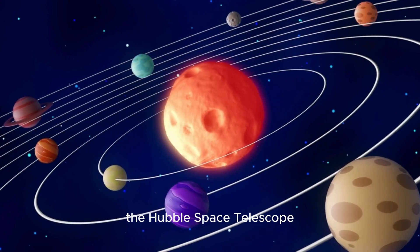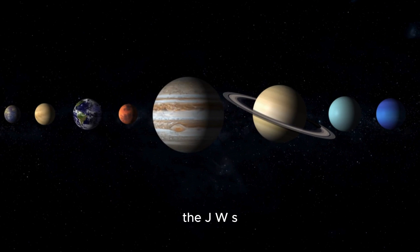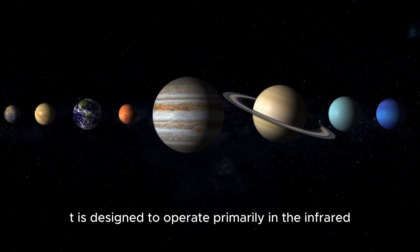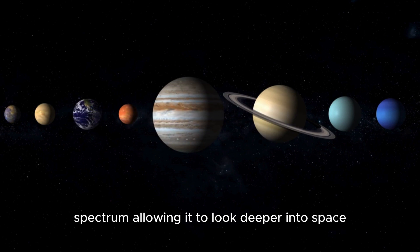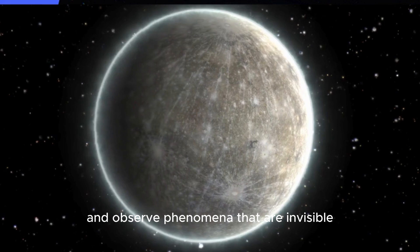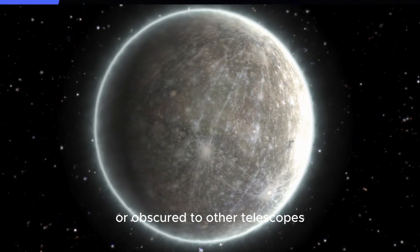Much like its predecessor the Hubble Space Telescope, the JWST is designed to operate primarily in the infrared spectrum, allowing it to look deeper into space and observe phenomena that are invisible or obscured to other telescopes.